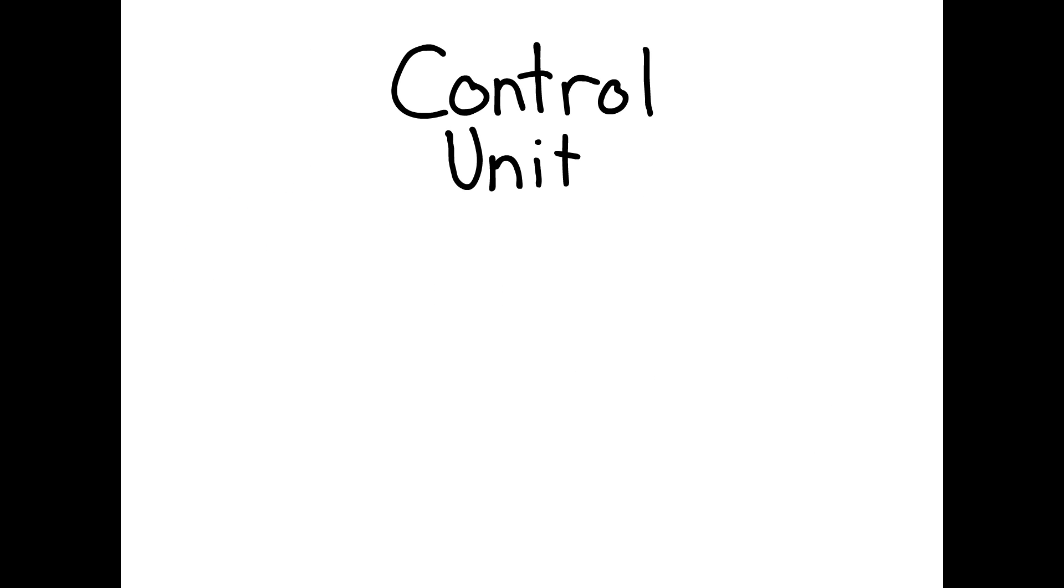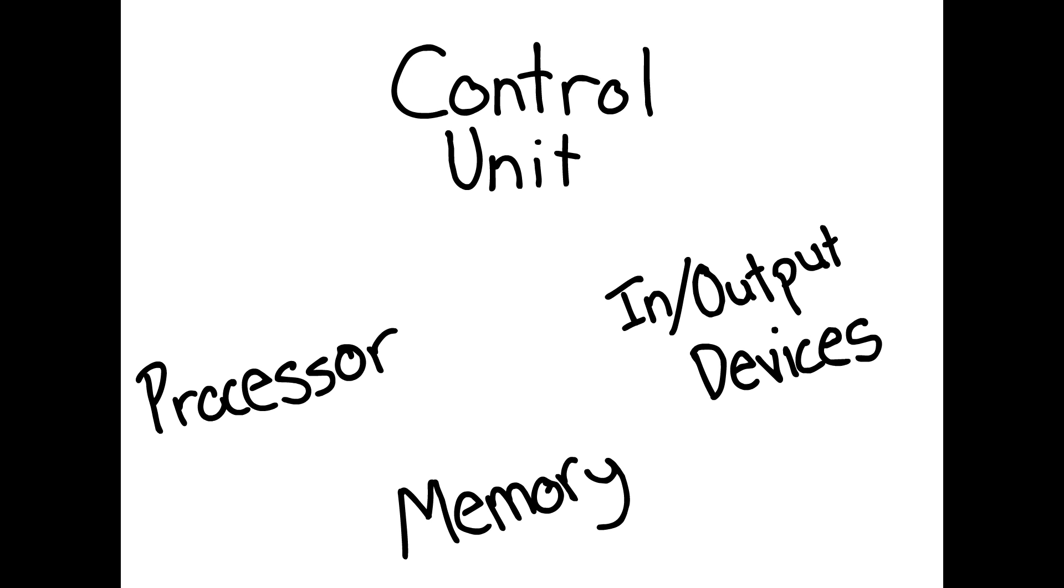The control unit does just that. It controls the rest of the computer, but more specifically, it directs the rest of the processor, the memory, and any input and output devices as to how to respond to directions from programs.